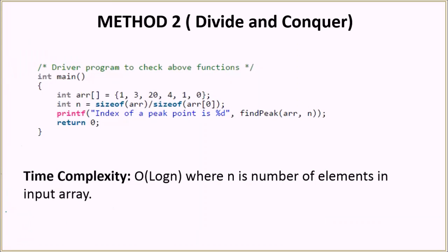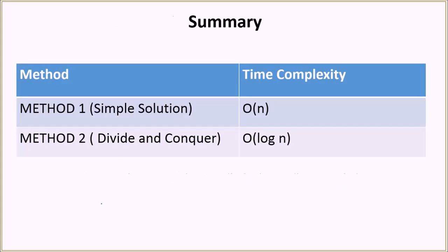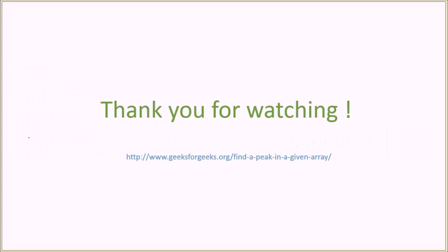This is the driver function — we have an array, pass in the size, and print the result using findPeak, which does the recursive calls and binary search. The time complexity is O(log n), where n is the number of elements in the input array. In summary, we discussed two methods: linear search with O(n) time complexity, and divide and conquer with O(log n) time complexity. The second method is preferable because it has better time complexity. You can visit the link to find all the material discussed and run the code. Thank you very much, see you in the next video.